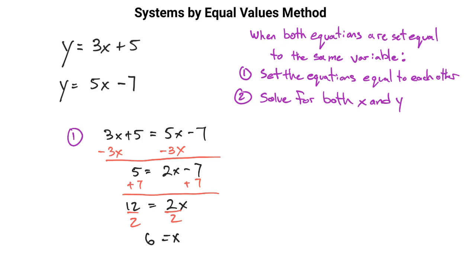Step 1 was to set the equations equal to each other. Step 2 is to solve for both x and y. We have the x value, so now we need to find the y value. We'll use the top equation and plug in x equals 6.